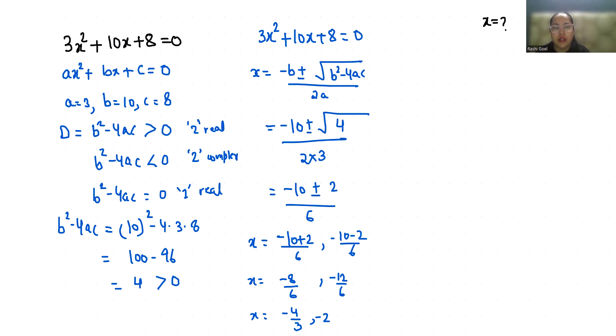This is method 1. Now method 2, you can find out with the middle term split method. So you can write 10x as 6x + 4x. So 3x² + 6x + 4x + 8 = 0.